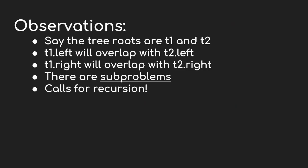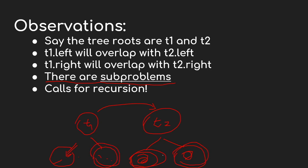Let's make some observations. Say the two trees have roots t1 and t2. When you overlay them, the left subtree of t1 overlaps with the left subtree of t2, and the right subtree of t1 overlaps with the right subtree of t2. This makes it clear that these are sub-problems: if we can figure out the solution for overlapping the left child of t1 with the left child of t2, and the right child of t1 with the right child of t2, then we can construct the solution for the root.